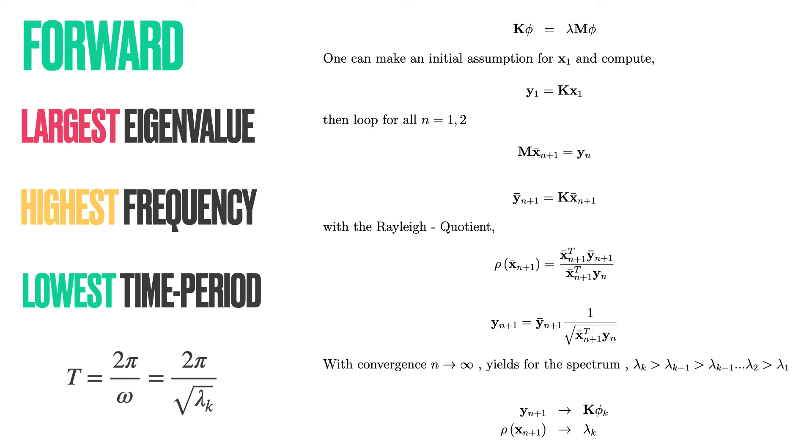Remember, we are using x instead of phi, and rho instead of lambda in our algorithm, as these are just approximations. So we assume an initial value x1. Then we compute y1.